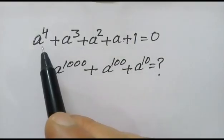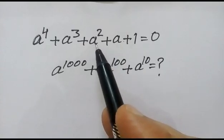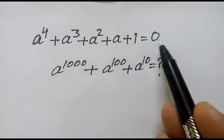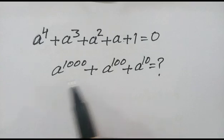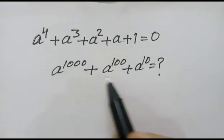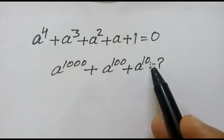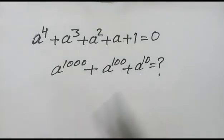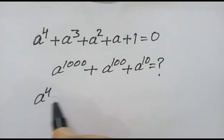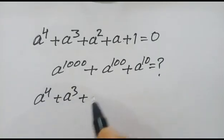Hi friends, we have given a to the power 4 plus a cubed plus a squared plus a plus 1 is equal to 0. We have to find out the value of a to the power 1000 plus a to the power 100 plus a to the power 10.